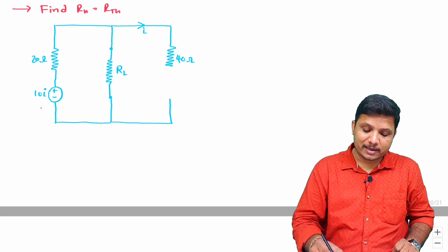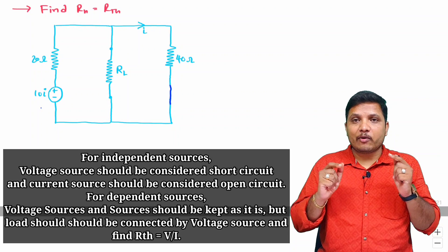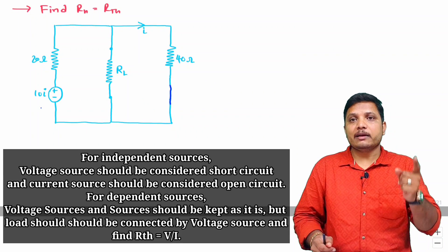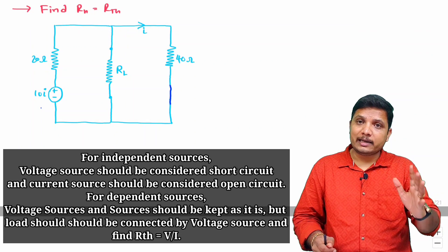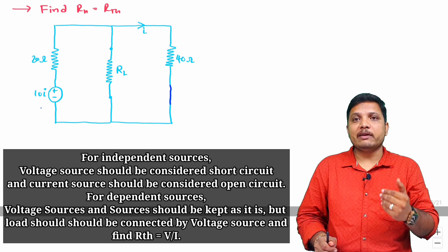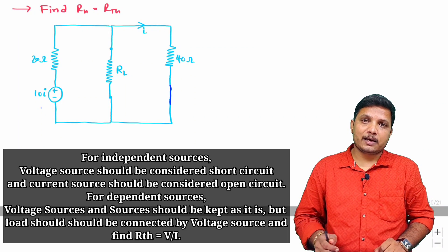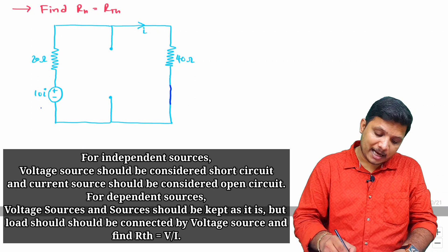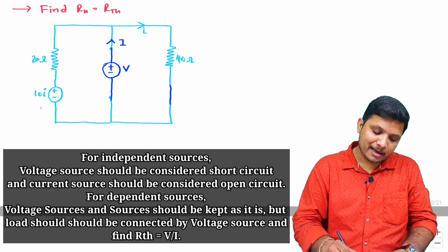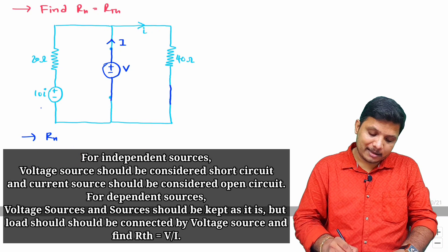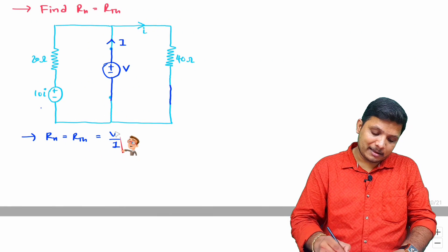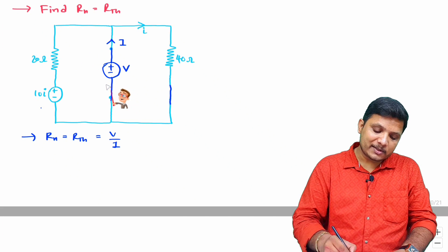With the dependent source, the load is replaced by a battery with polarity plus-minus. If it produces current I, then V divided by I equals the equivalent resistance R_n or R_th. The independent voltage source is short-circuited. We then set up two loops to solve the equations.